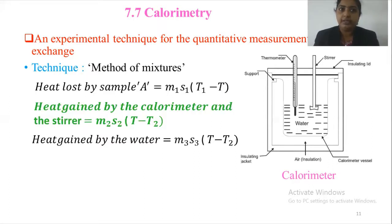Assuming no loss of heat to the surroundings, the heat lost by the sample goes into the calorimeter, stirrer and water. Thus writing heat equation as M1 S1 into T1 minus T equals M2 S2 into T minus T2 plus M3 S3 into T minus T2.